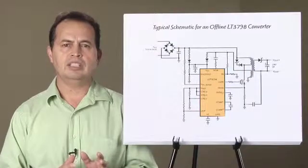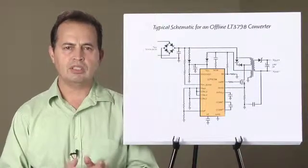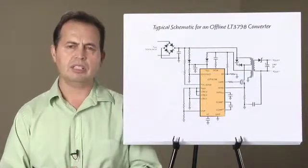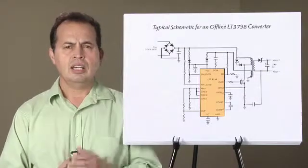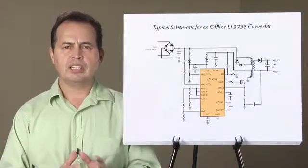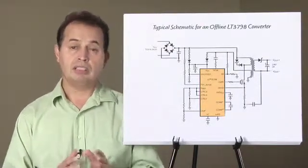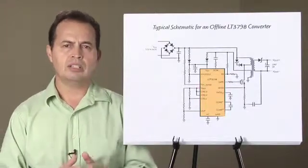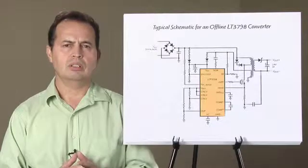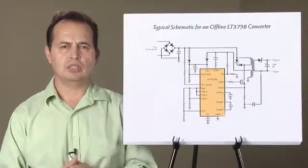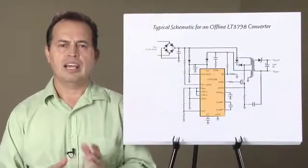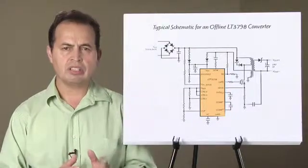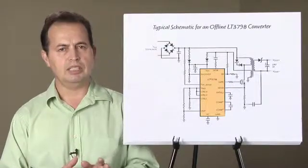This part can also regulate output current for LEDs or other constant current applications. In a flyback converter operating in boundary mode, the LT3798 relies on peak switch current, duty cycle, and turns ratio to infer the amount of current on the output side. The accuracy of the regulated voltage or current is typically within plus or minus 5%.